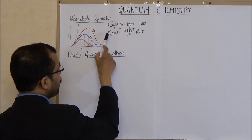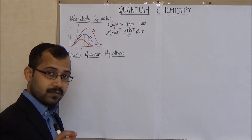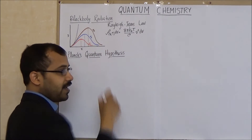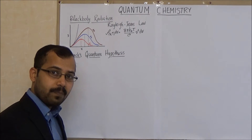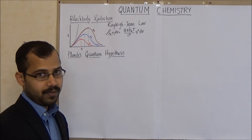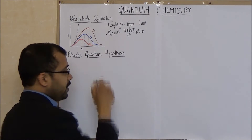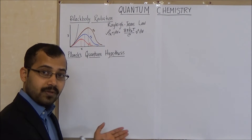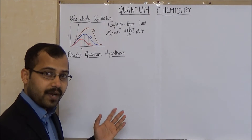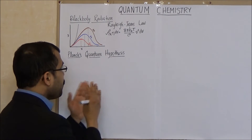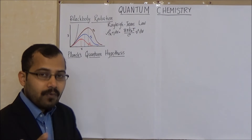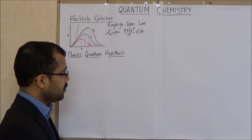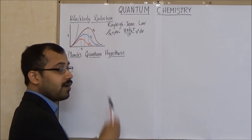So classical mechanics was not able to explain experimental black body curves. Was there any mistake in the derivation of Rayleigh-Jeans law? In fact, not according to the principles of classical mechanics. In the derivation of Rayleigh-Jeans law, they assumed that the radiation is due to the vibrations of the electronic oscillators in the material body. So these electronic oscillators can take on a continuum of values for their energy, which is true according to classical mechanics.